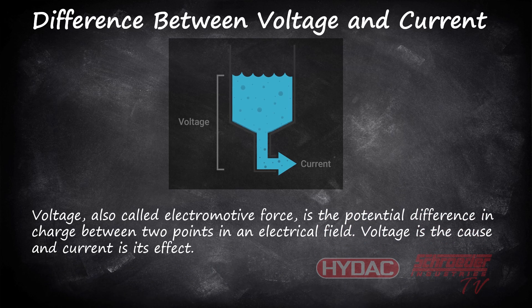Now for voltage. Voltage is the potential difference in charge between two points in an electrical field. Voltage is usually the cause and current is always the effect. Just like water needs pressure to force it through a hose, electrical current needs some force to make it flow. A volt is the measure of electric pressure.